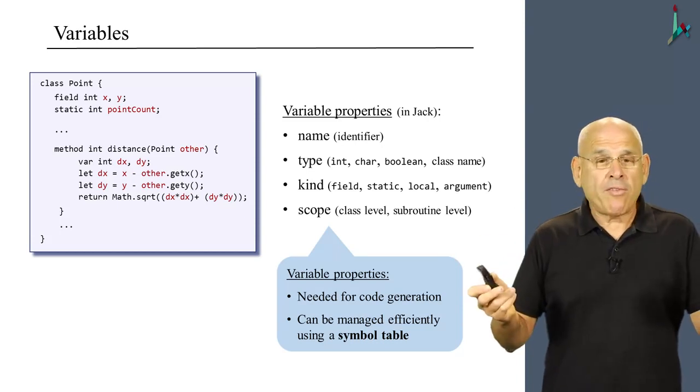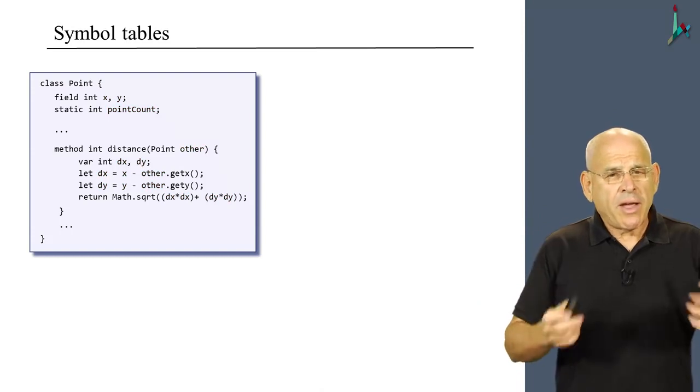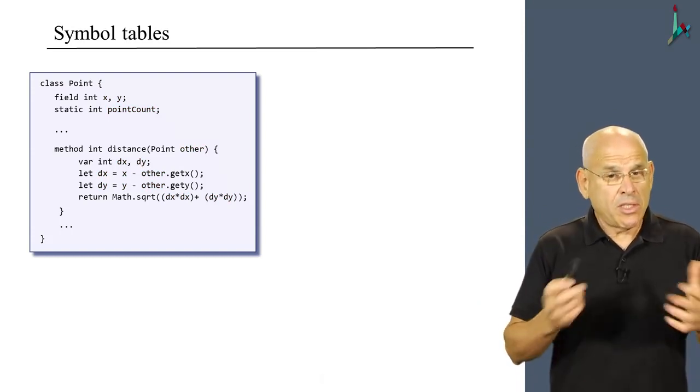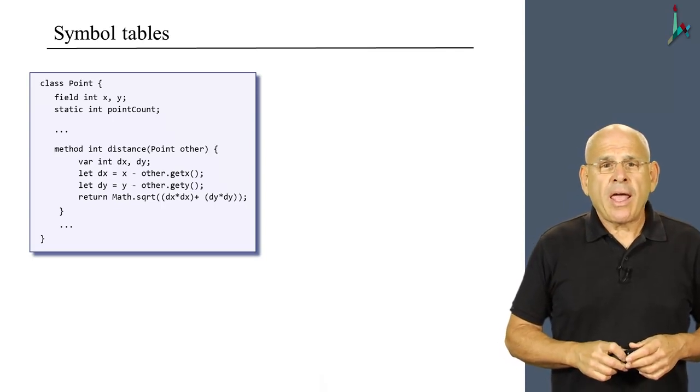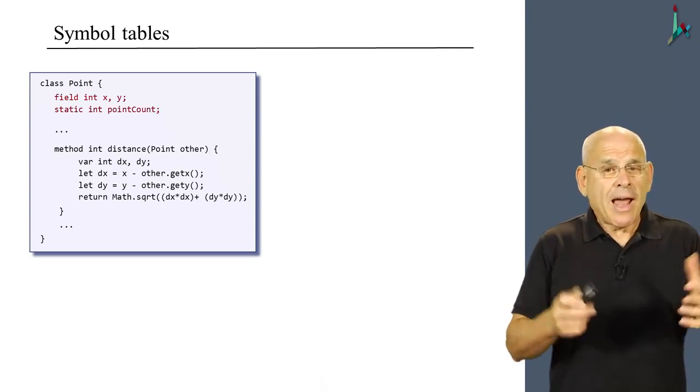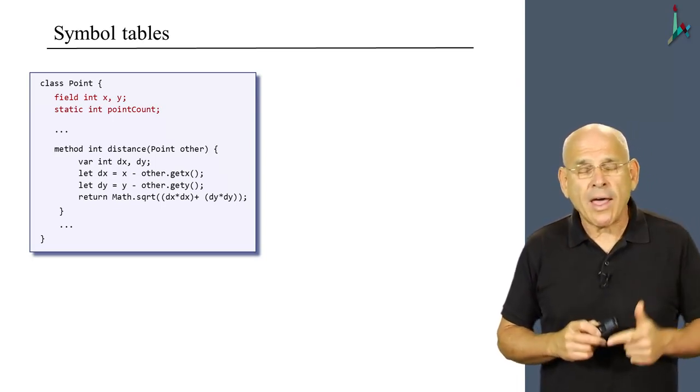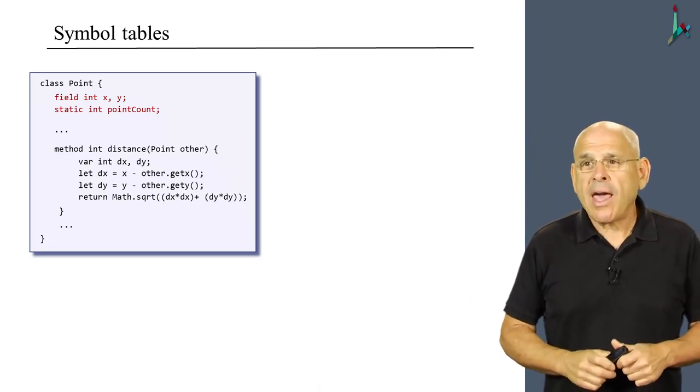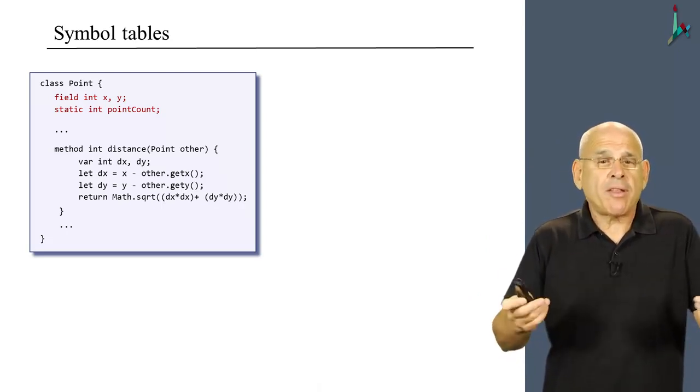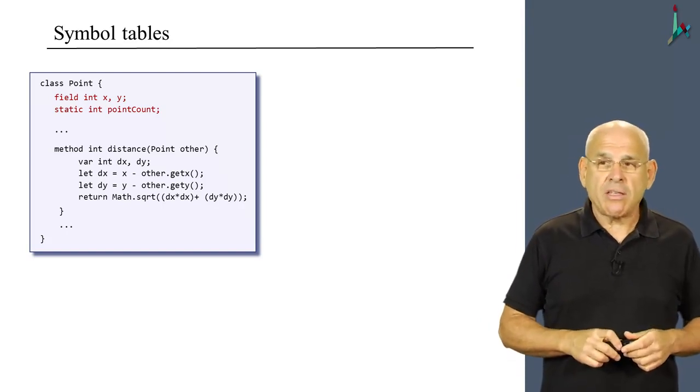Well, the typical way of handling it is using something called symbol table. So, we'll illustrate the notion of symbol tables using an example, using this particular piece of code. And let us begin with the class level variables, of which we have three. We have x, y, the coordinates of the point. And point count, which is a variable that counts how many points we have constructed so far.